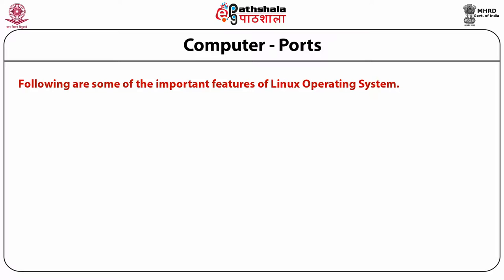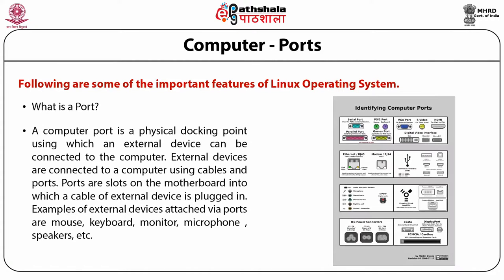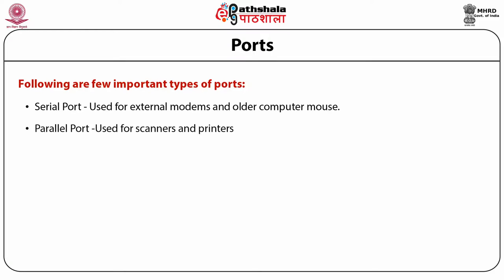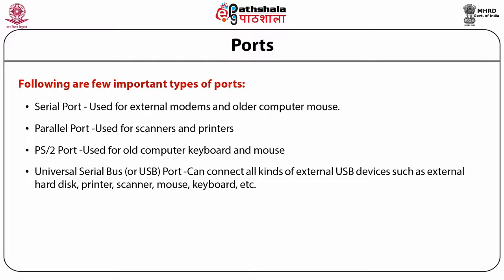A computer port is a physical docking point using which an external device can be connected to the system. External devices are connected using cables and ports — these are slots on the motherboard into which the cable of the external device is plugged. External devices include mouse, keyboard, monitor, microphone, and speakers. Types of ports include serial ports (used for external modems and older mice), parallel ports (used for scanners and printers), PS/2 ports (for earlier keyboards and mice), and USB or universal serial bus ports, which can connect all kinds of external USB devices.